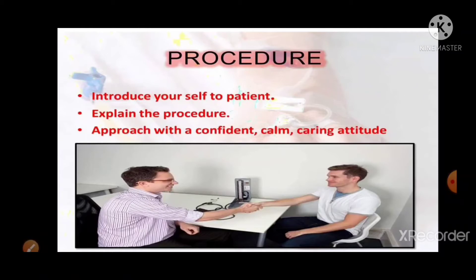The procedure of cannulation begins by introducing yourself to the patient. Gather equipment for intravenous cannulation, sanitize your hands using alcohol cleanser, apply the tourniquet, recheck the vein, clean the patient's skin with an alcohol wipe, then remove the needle cover and approach with a confident, calm, and caring attitude.